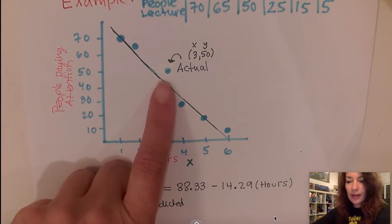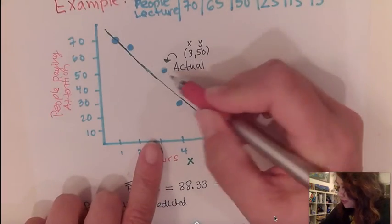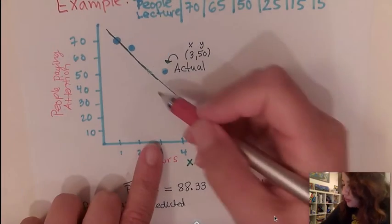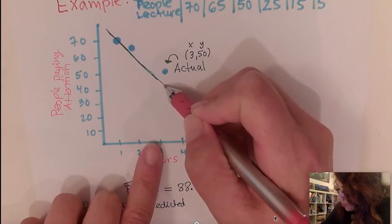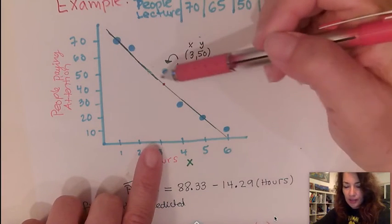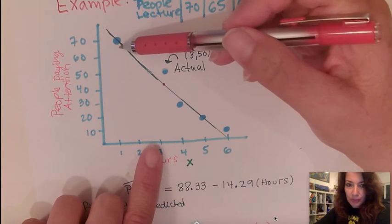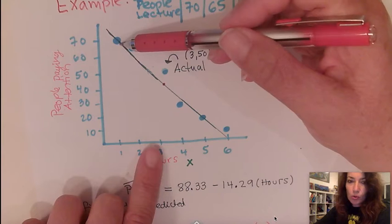So how would I calculate a residual? Well, what does it look like visibly? Visibly, a residual is the vertical distance. So that means I need to know what point would be predicted. Anything on this line is a predicted point. Now you could have an actual point on a predicted line. That means the residual would be zero.